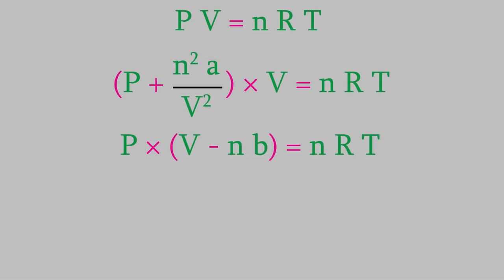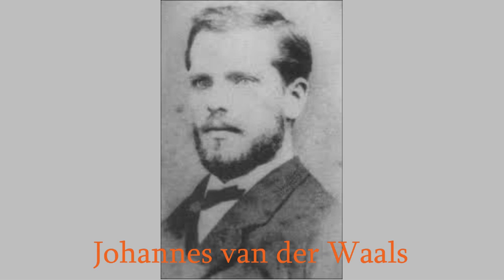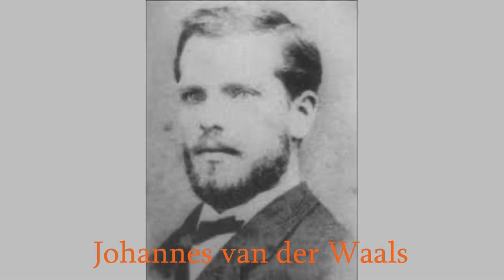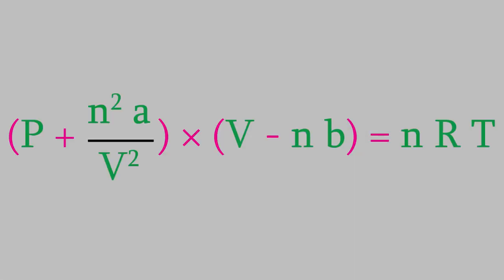So there were two assumptions in the kinetic theory, and as a result we had to make two corrections to the ideal gas law. If we put them both together, we get this equation. It's more complicated than the ideal gas law, but it's also a lot more accurate. This equation was first determined in 1873 by the Dutch physicist Johannes van der Waals, and it's one of the achievements that won him the Nobel Prize in Physics in 1910. Van der Waals was especially interested in the forces that make molecules attract each other.